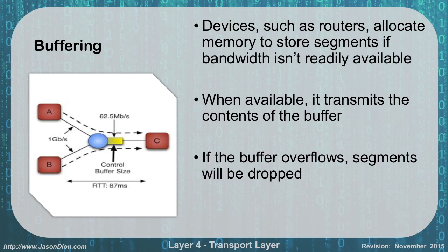With buffering, devices such as routers and switches have memory allocated to store segments if the bandwidth isn't readily available. In this case, the router has a throughput of 62 megabits per second, but devices sending data are sending at 1 gigabit per second — over 10 times faster. If both devices were transmitting continuously, the router wouldn't keep up. The buffer would fill, and if it gets too full, it overflows and drops segments. Those dropped segments can be resent if devices are using TCP. To increase your buffer, you can add more memory to the router, or increase your WAN speed — for example, going from 60 megabits to 100 or 150 megabits per second.